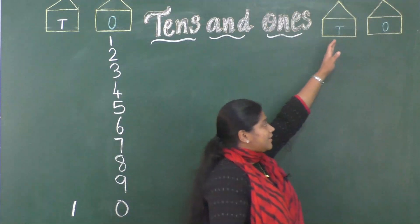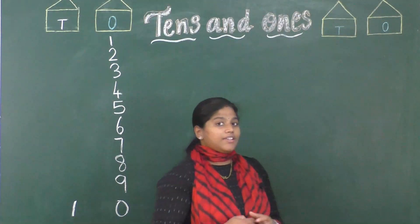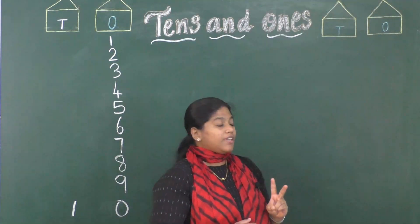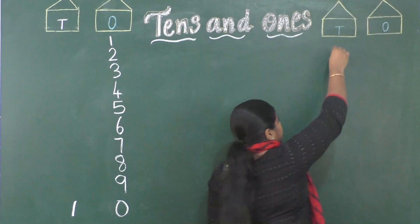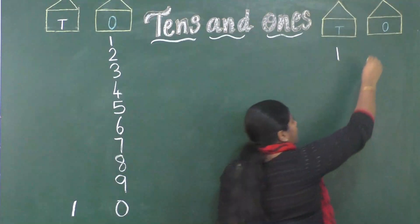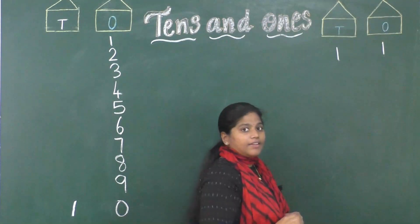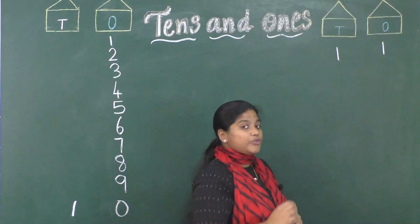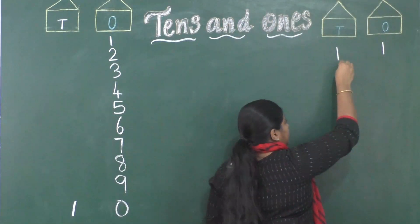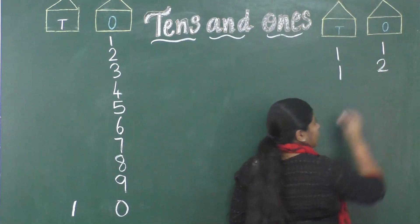So how to write 11 in tens and ones place? Here I have the tens house and ones house. 11 has 2 digits, so we write the 1st digit in tens place and the 2nd digit in ones place: 1 and 1 — that is 11. After 11 I have 12: 1 and 2 — that is 12.